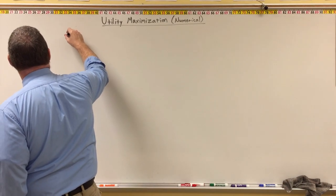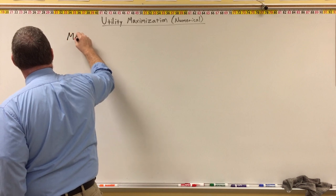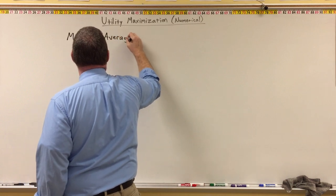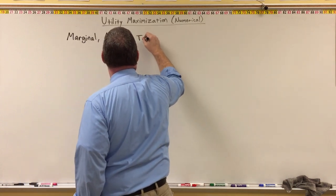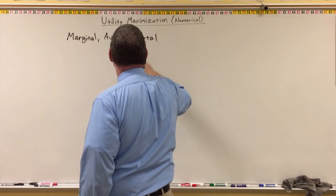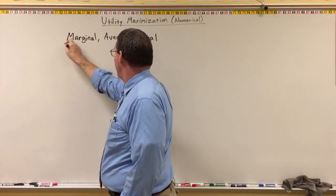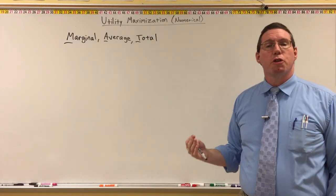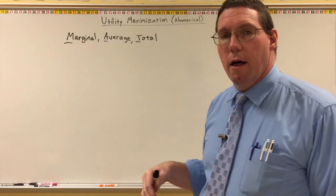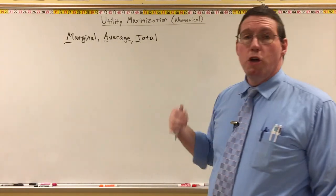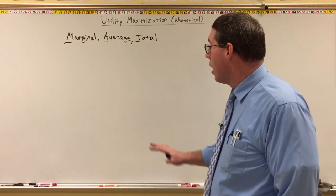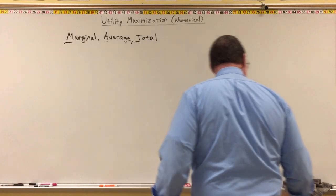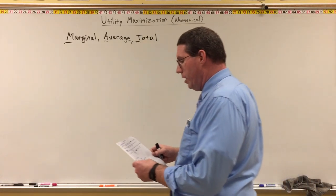What we're going to learn about in this segment is what I call marginal, average, total — you might remember it as MAT: M-A-T. These are three important concepts in microeconomics. If you don't understand them, you will never have a full understanding of economics. You've got to understand the marginal, you've got to understand the average, you've got to understand the total. Instead of just giving you definitions, I'm going to give you an example.